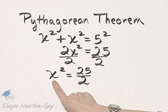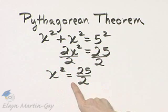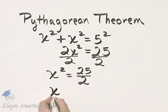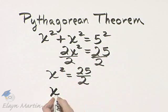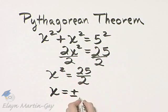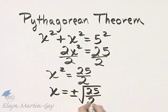Now, the following is true. If some number squared is 25 over 2, then that number itself, that value of x, is either the positive or negative square root of 25 over 2.